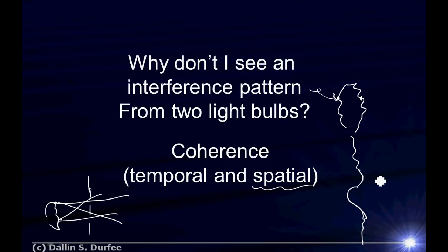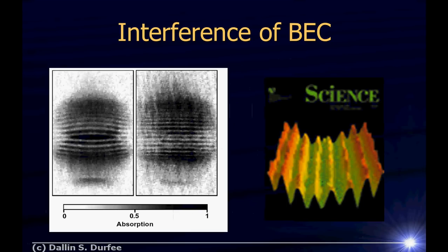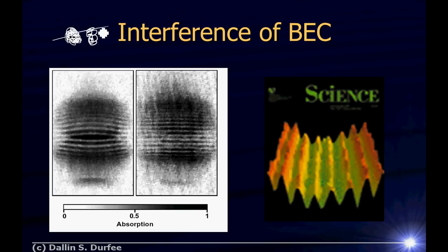In my graduate work, we made a Bose-Einstein condensate — coherent matter, analogous to a laser beam but for atoms. A small cloud of sodium atoms shared the same quantum phase, like one big sine wave. We made two of these condensates, held them in a trap, and let them fly into each other. As the gas clouds overlapped, we saw interference fringes. Here's a 3D rendering of that result, which made the cover of Science. Anytime you have coherence, interference shows up, and interference tells you that what you're looking at is a wave.